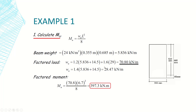The first combination gives 70.8 kilonewtons per meter, while the second gives 28.47. I'll use the higher value: W_ultimate = 70.8 kN/m. Substituting into M_ultimate = W_ultimate × L² / 8, with L = 6.7 meters, I get the design moment of 397.3 kilonewton·meters.